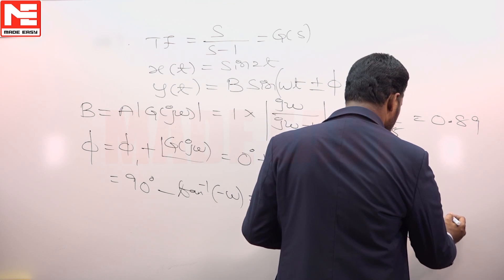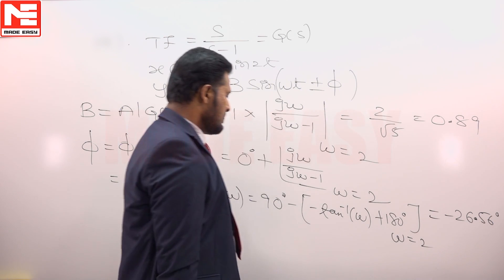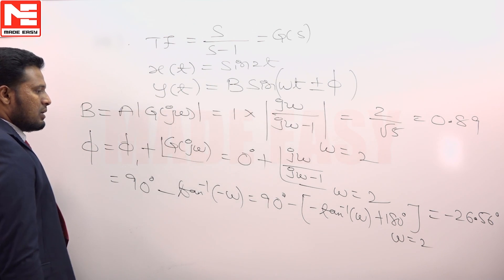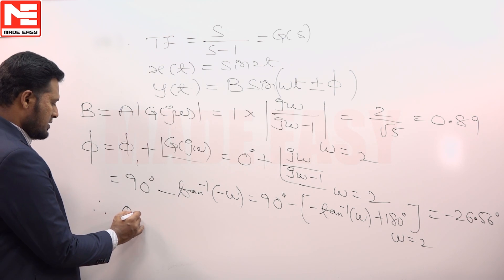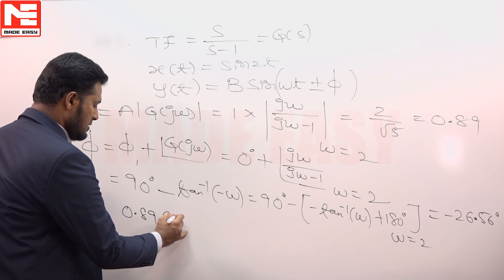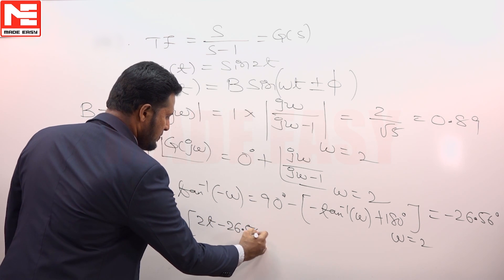This becomes -26.56°. Hence the output is 0.89 sin(2t - 26.56°).